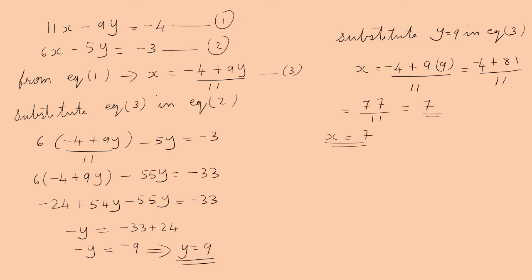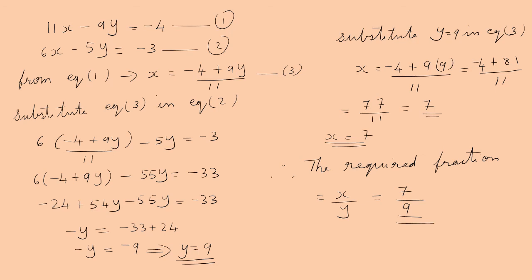Substitute y = 9 in equation 3: x = (−4 + 9×9)/11 = (−4 + 81)/11 = 77/11 = 7. Therefore x = 7. The required fraction is x/y = 7/9.